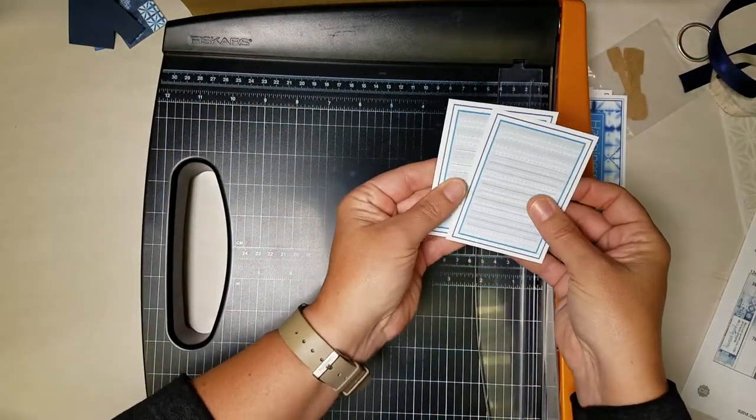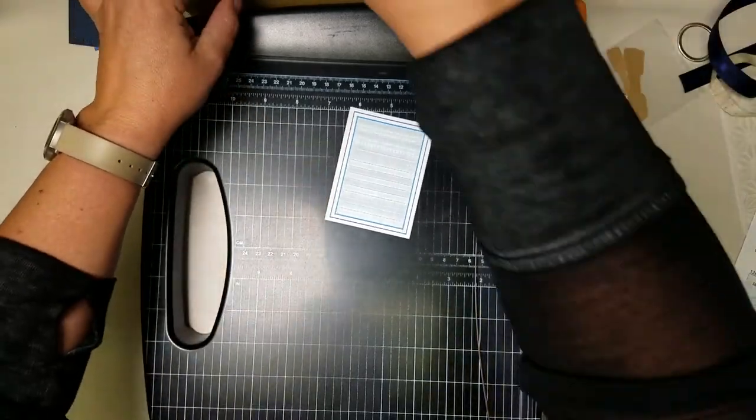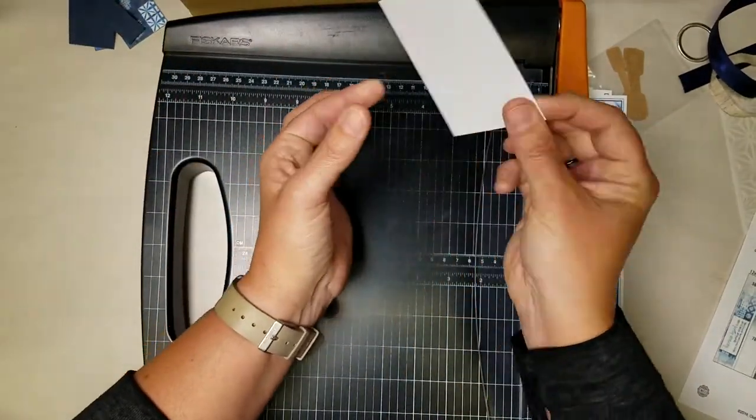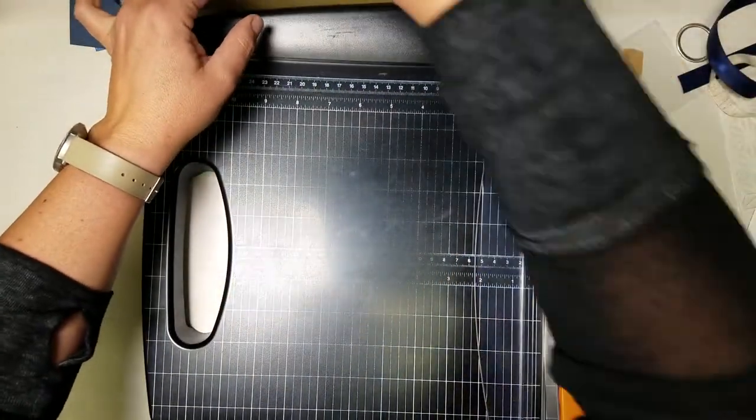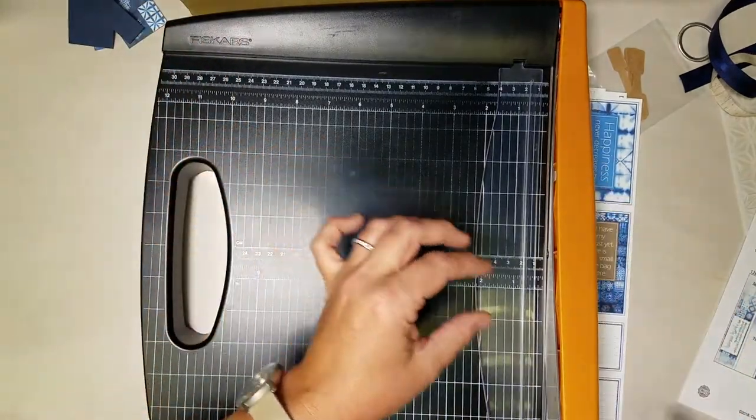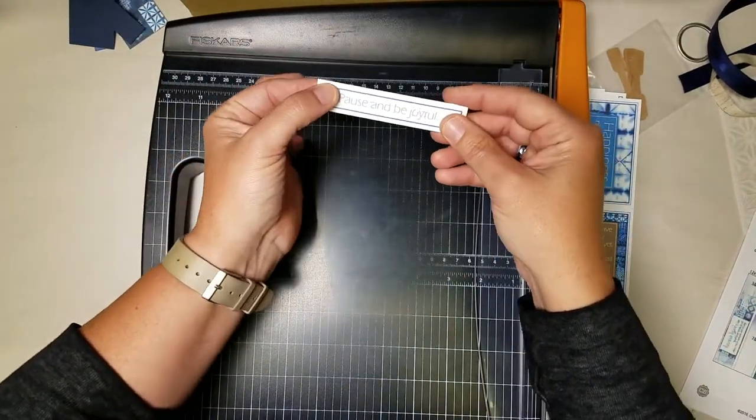And then we have these journaling prompts. One of them goes in five and six and the other is used plain side up in three and four. And this little guy pause and be joyful seven and eight.